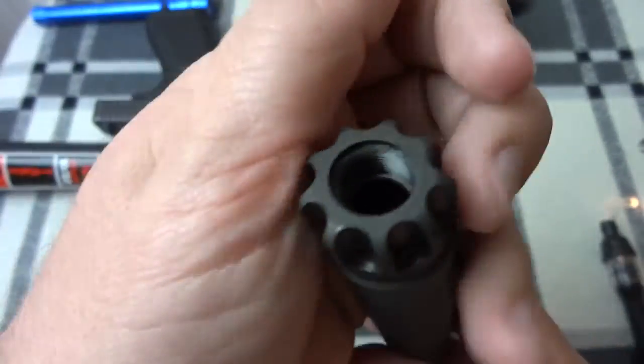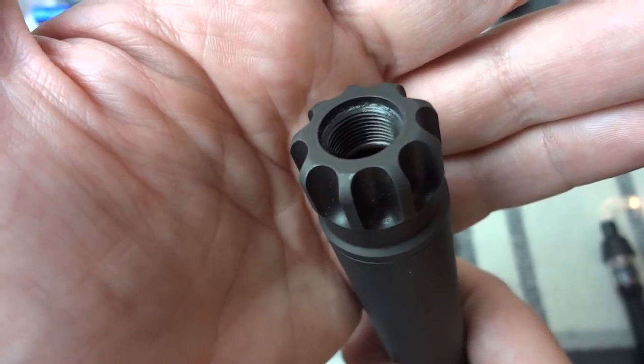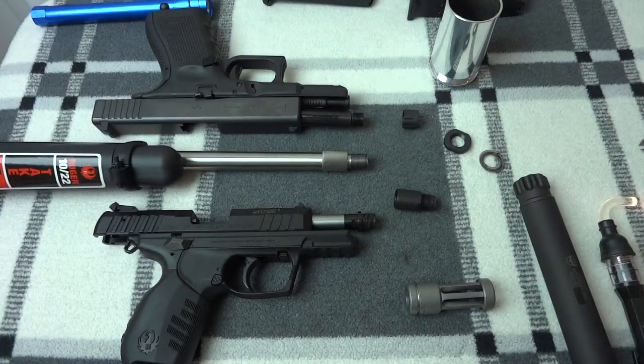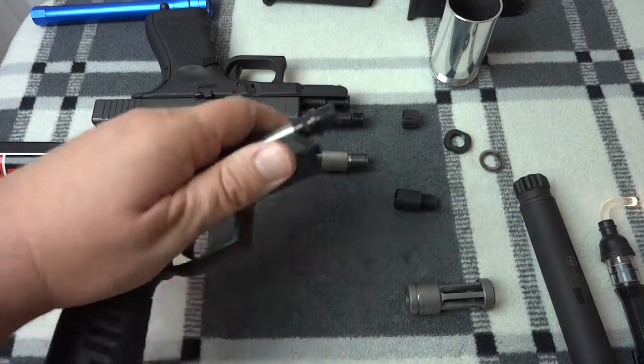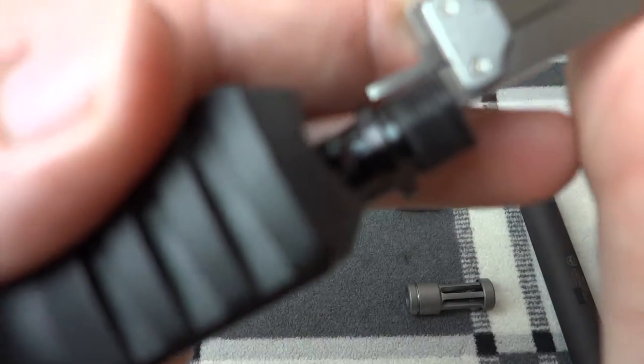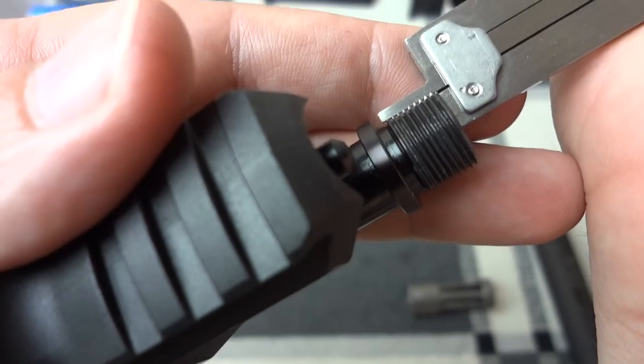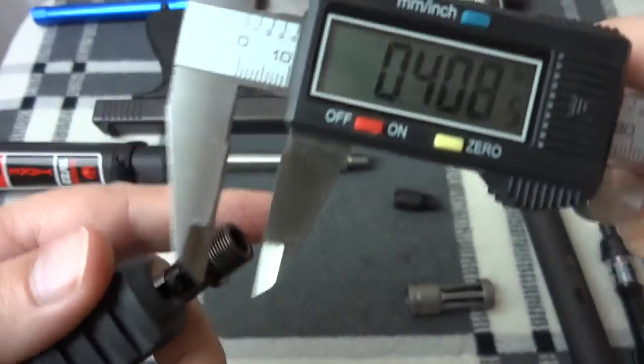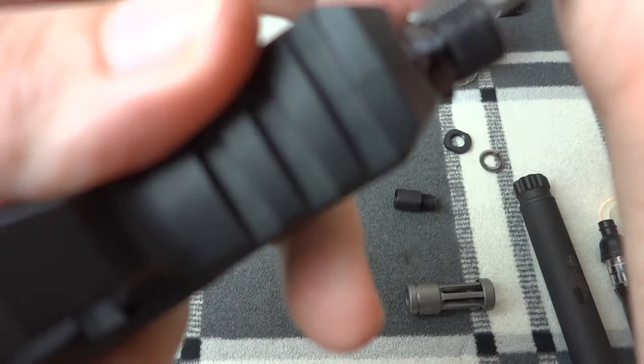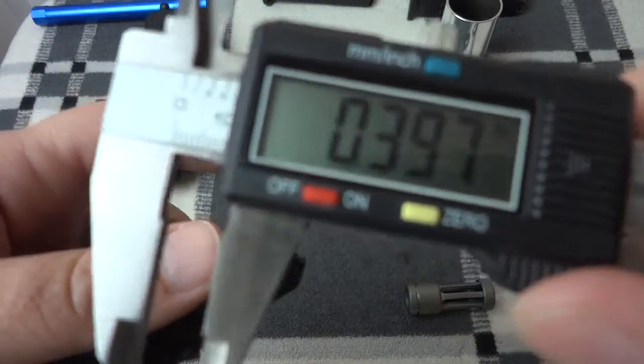Now, that's the way that SilencerCo expects you to thread it on the muzzle. They also say that if you have the muzzle threaded with a thread length of 400 thousandths, that is just fine. Let's see if we can get it to focus there. So what I'm going to do is look, and that's 409 thousandths. Let's see if we can get a better measurement because I thought it was 397.